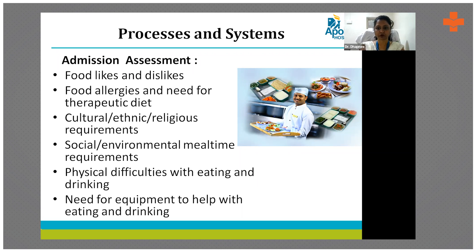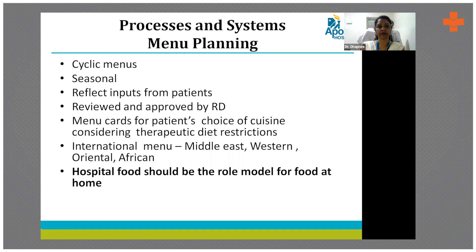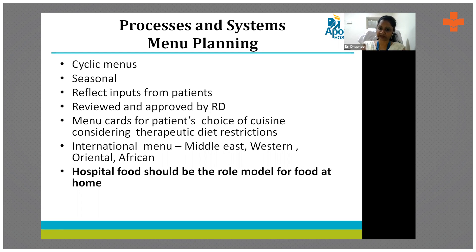Cultural, ethnic, and religious requirements have to be considered, as well as social and environmental mealtime requirements. Physical difficulties of eating are assessed and equipment support is provided if needed. For meal planning in hospitals, a cyclic menu is followed using seasonal vegetables. Patient feedback is incorporated when the menu is updated, reviewed by the chief dietitian, approved, and menu cards are sent to patients.